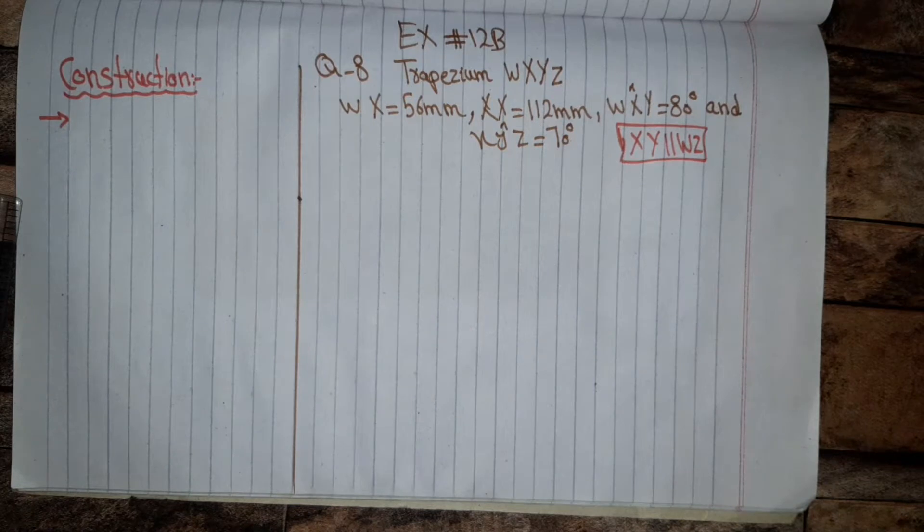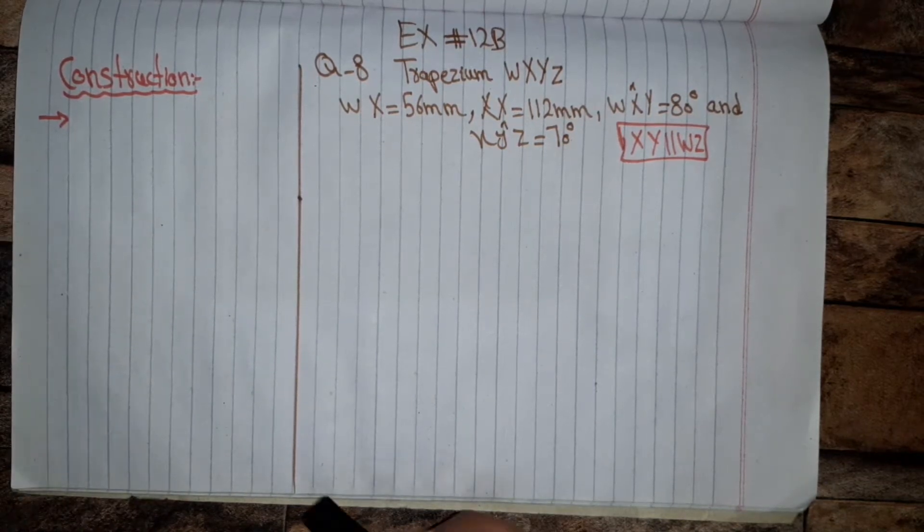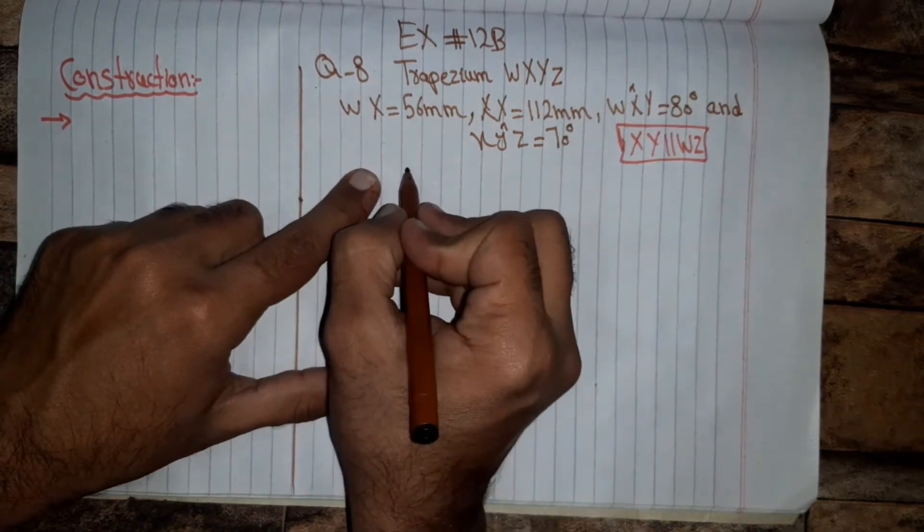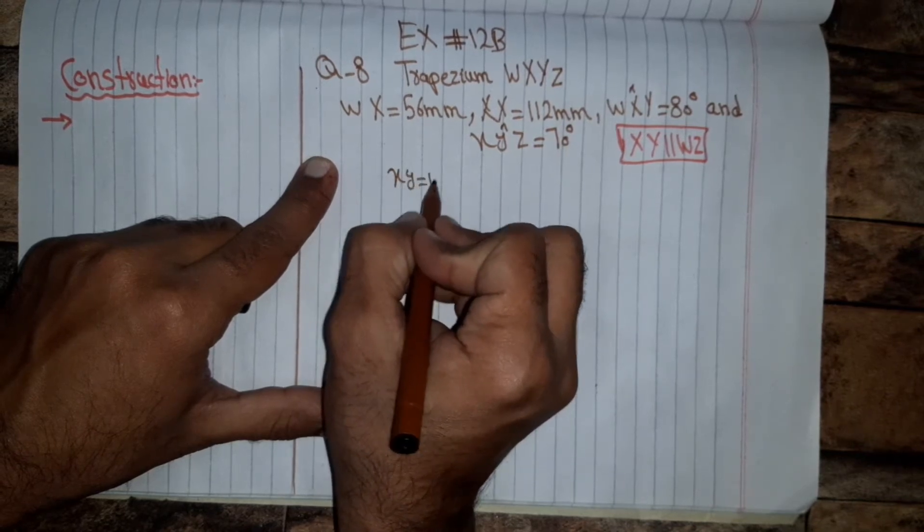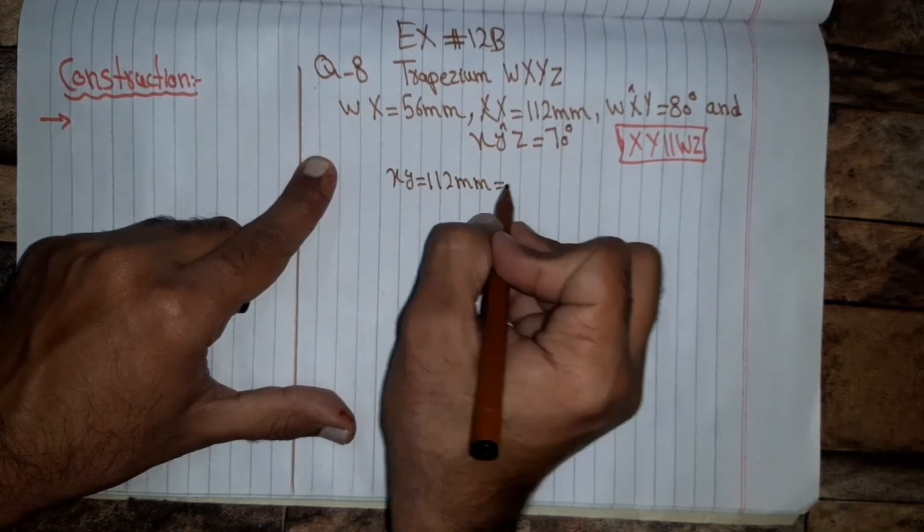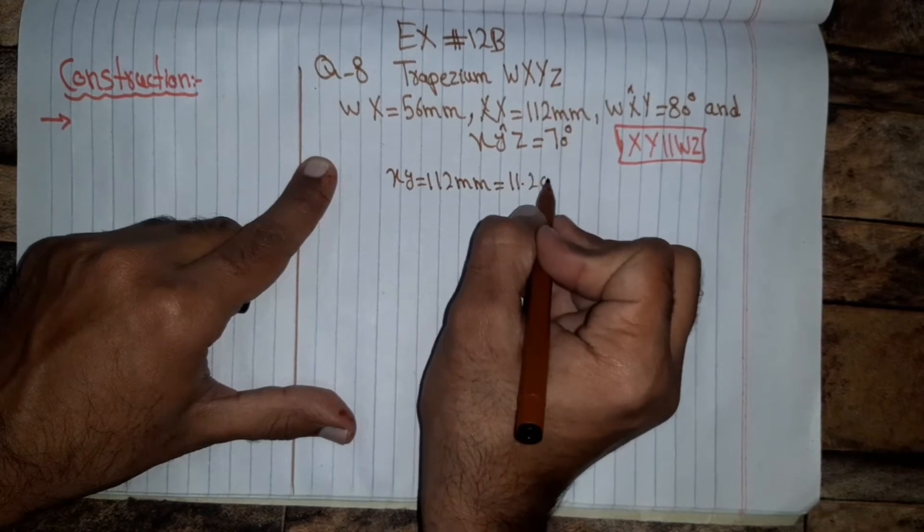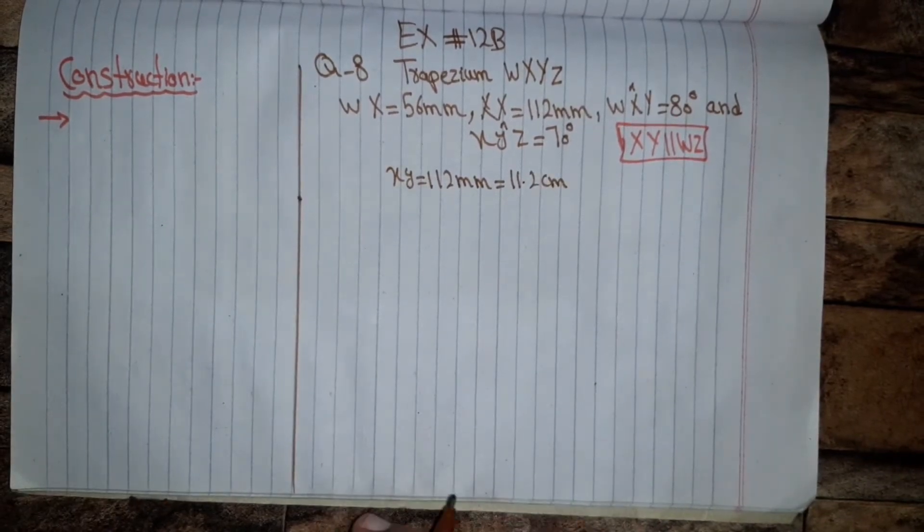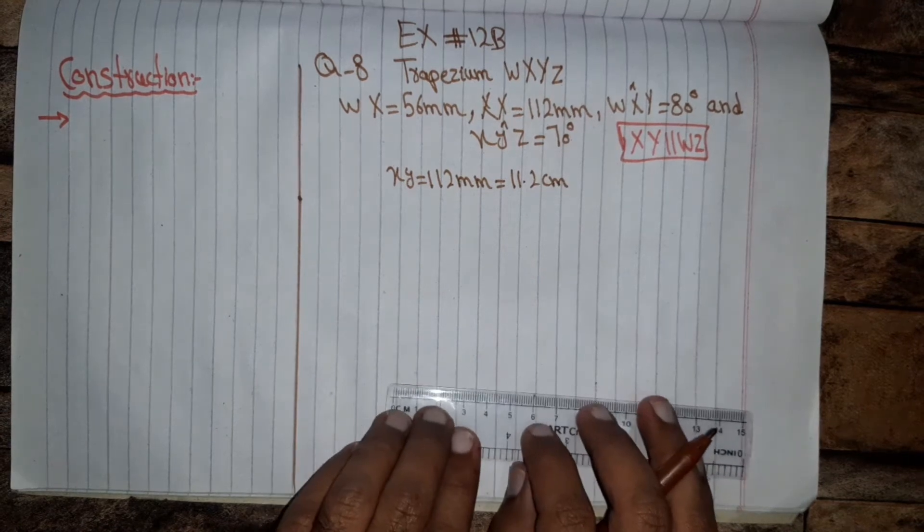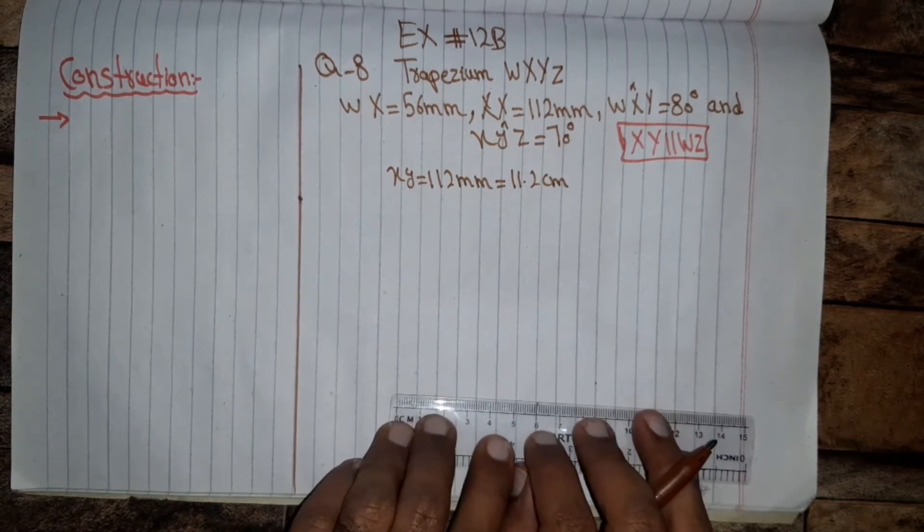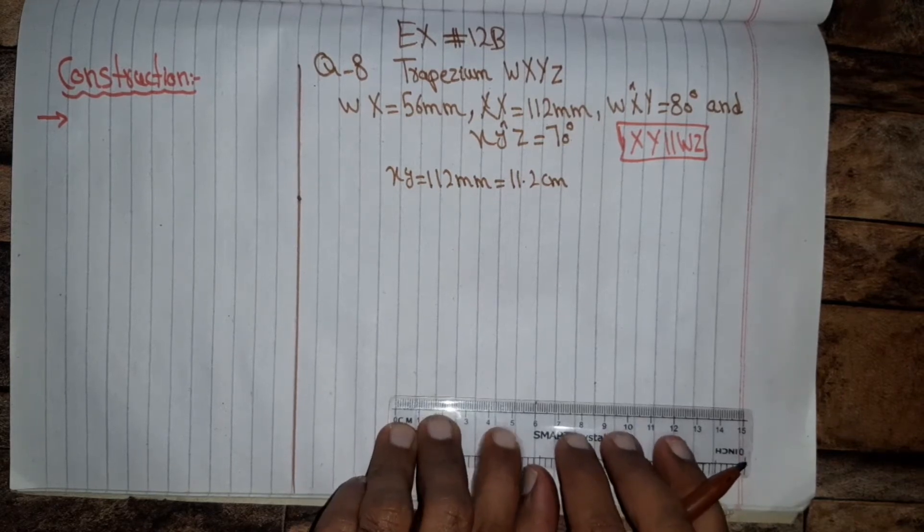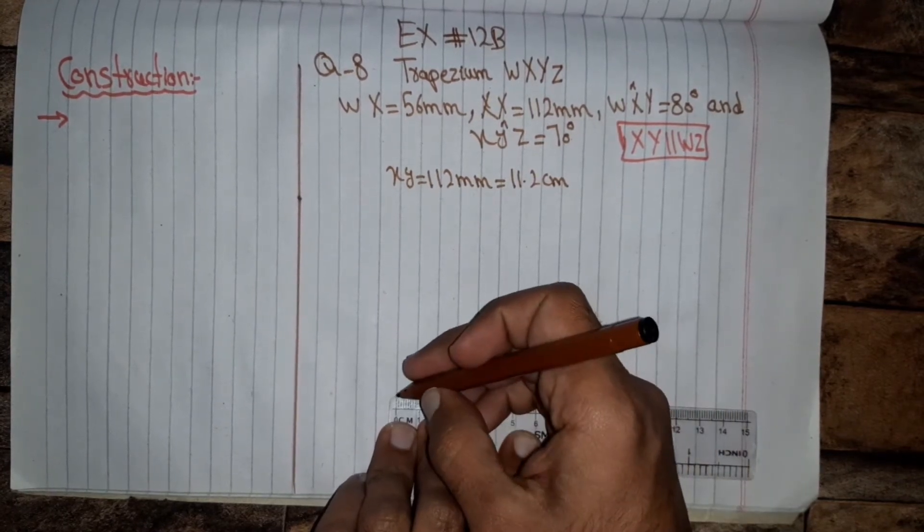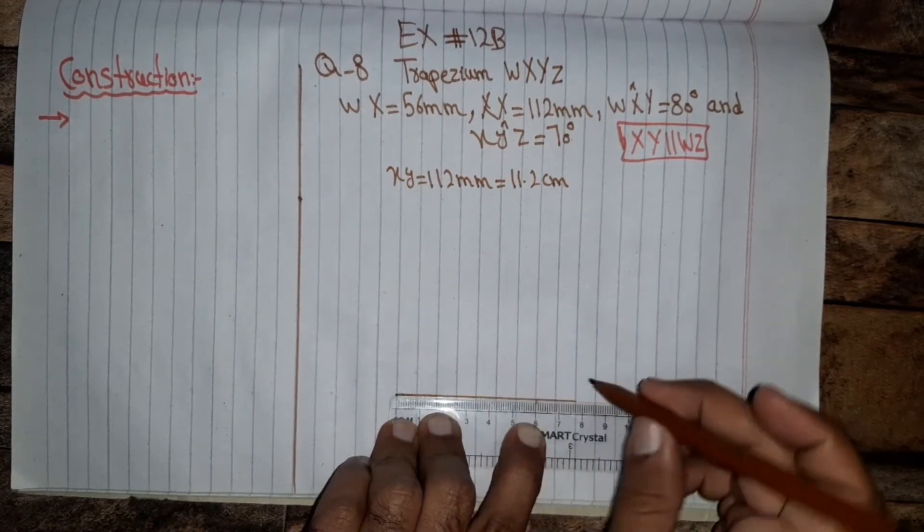First of all we will draw XY which is equal, so XY equal 112 millimeters means 11.2 centimeters. So this is 11.2, two centimeters length XY equal 11.2 centimeters.